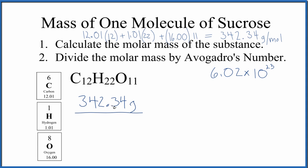So we have 342.34 grams in one mole of sucrose. So this is the molar mass. We multiply that. We know that one mole of any substance has Avogadro's number. So one mole of sucrose atoms just has Avogadro's number there.